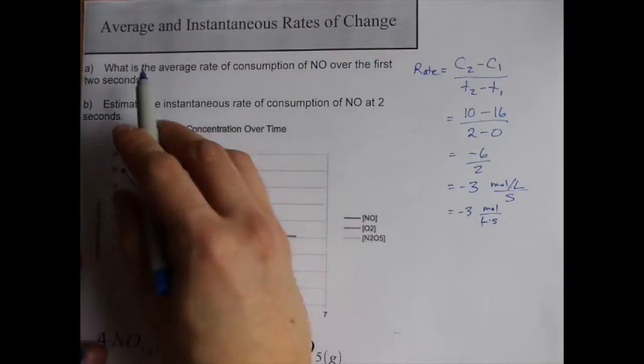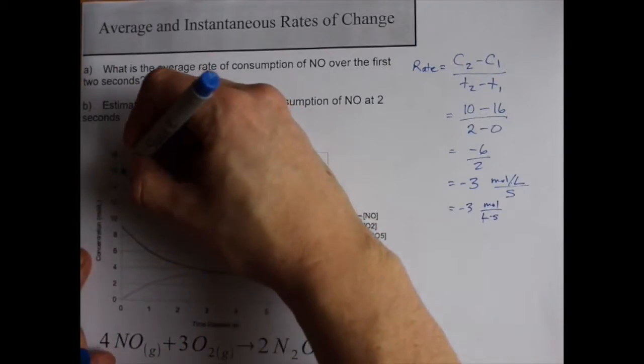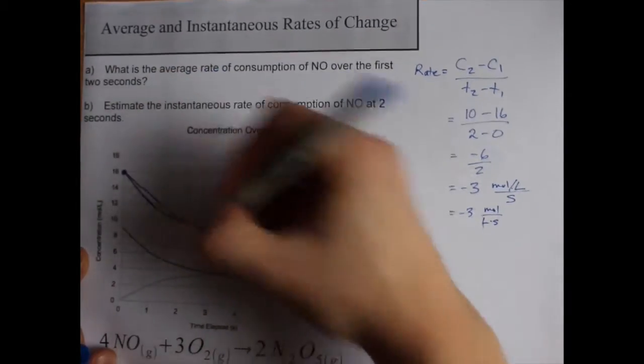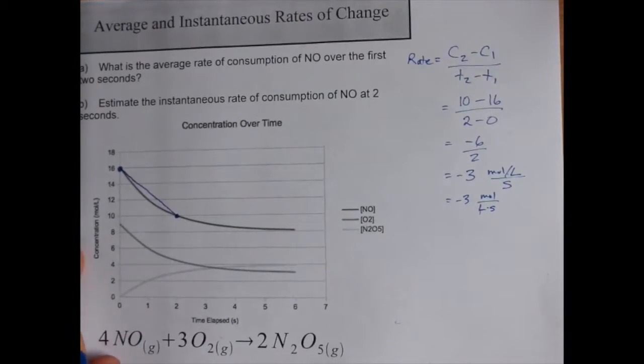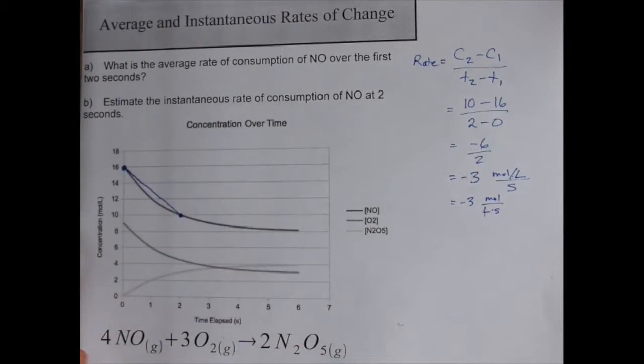Now the average rate of consumption of a chemical or production, I suppose, if it's a product, is the slope of the secant or the line connecting those two points. The instantaneous rate of consumption or production is the slope of a tangent line.